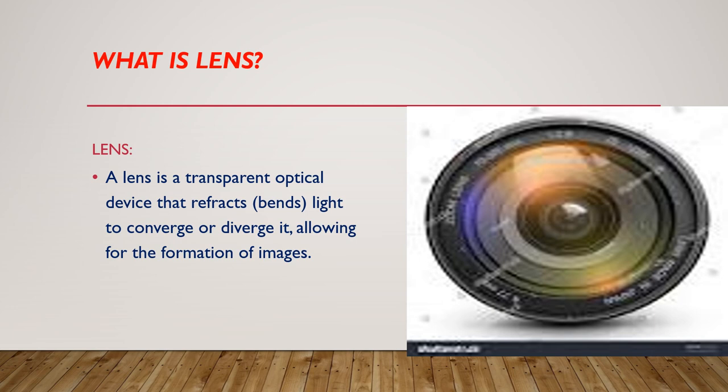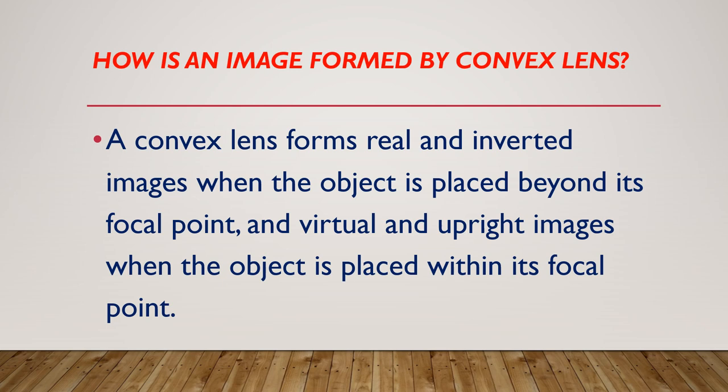How is an image formed by a convex lens? A convex lens forms real and inverted images when the object is placed beyond its focal point, and virtual and upright images when the object is placed within its focal point.